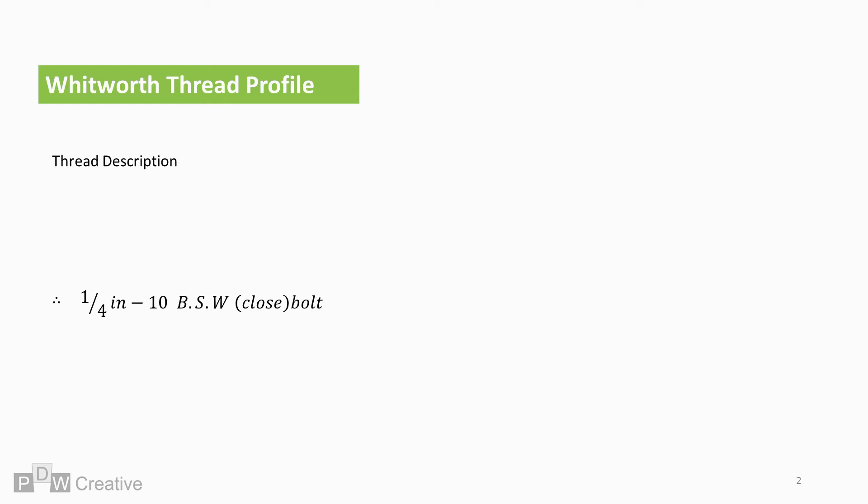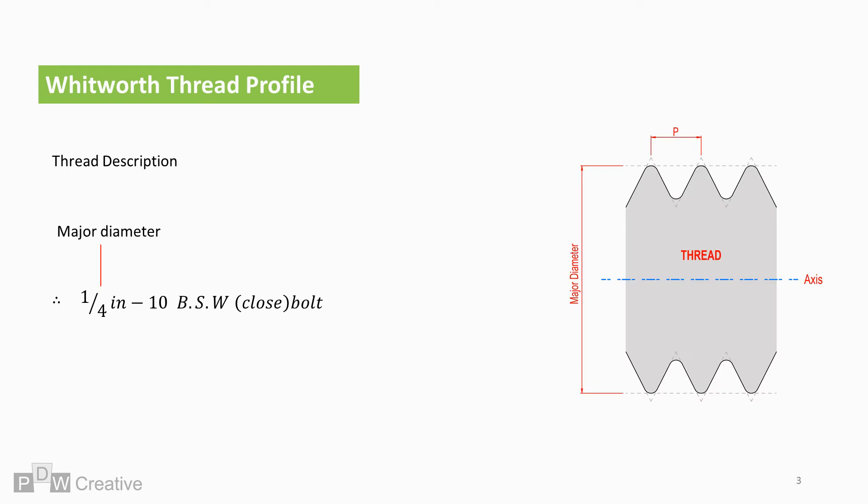The Whitworth screw threads are often written as shown. This is an example of a quarter inch thread. The fraction stands for the major diameter in inches. 10 describes the number of threads per inch — this is the number of pitches, P, shown in the drawing.